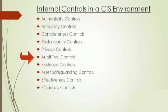Next comes existence controls. Existence controls attempt to ensure the ongoing availability of all system resources. For example, if you are preparing depreciation and require a FAR register and trial balance — if something is missing, this control provides a pop-up to ensure ongoing availability of system resources and prevents you from proceeding further. Examples include database dumps, logs for recovery purposes, duplicate hardware, preventive maintenance, checkpoints, and restart controls — all ensuring existence controls.